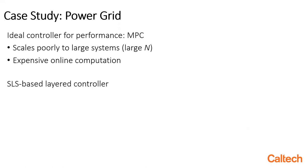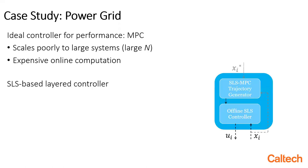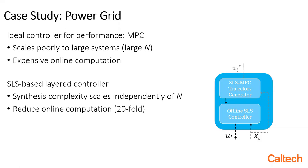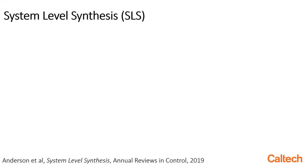We propose a different controller, an SLS-based layered controller, using an MPC-like trajectory generator and an offline controller, both of which are based on the SLS framework. This controller has synthesis complexity that scales independently of system size, making it applicable to systems of arbitrary size. Compared to the purely online controller, it reduces online computation 20-fold. And yet, it achieves performance that is nearly optimal, within 3% of the ideal controller. How are we able to do this? Well, we do this using system-level synthesis, or SLS, which we describe both the math and the recent literature in our paper.